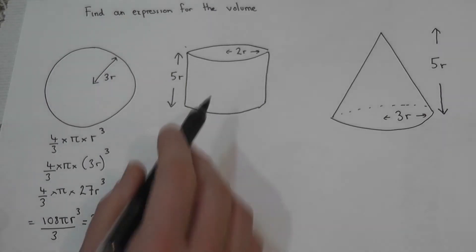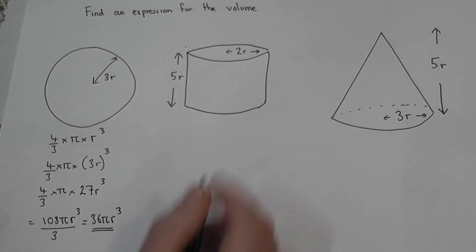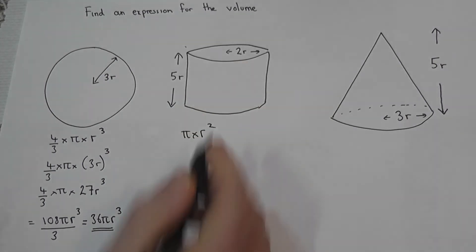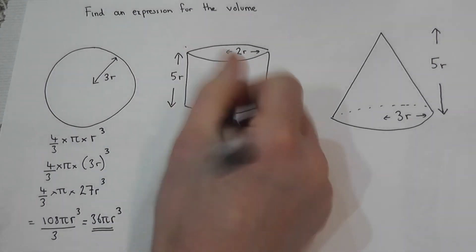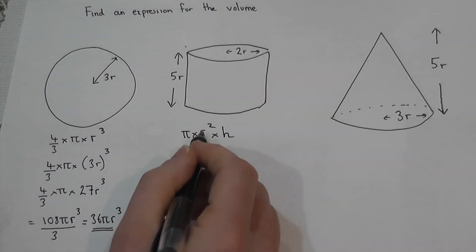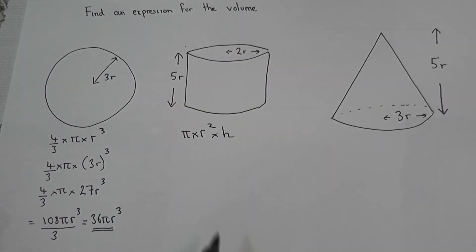The second one is a cylinder. Now a cylinder's volume is given by pi times by the radius squared. That's the area of the circle if you like times by the height or the depth. But in this case the radius is 2r and the height is 5r.